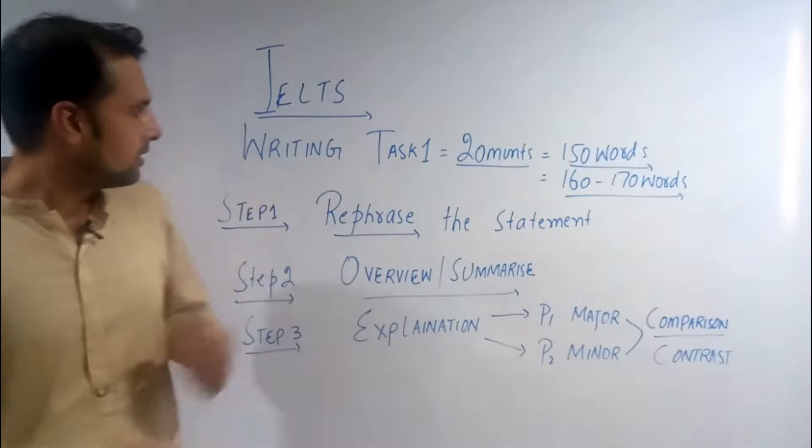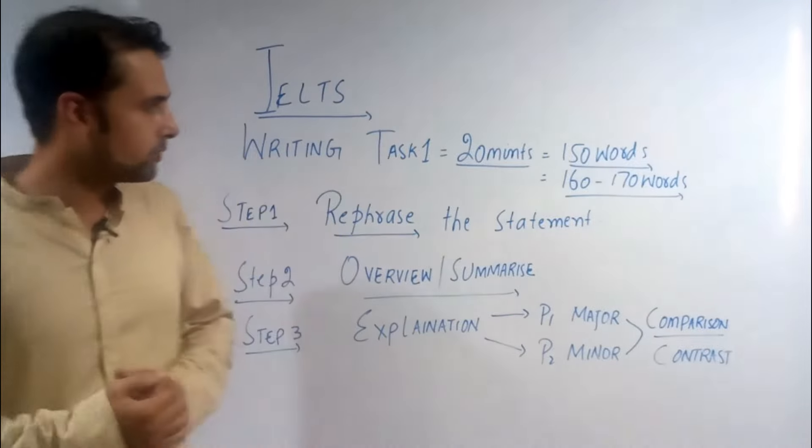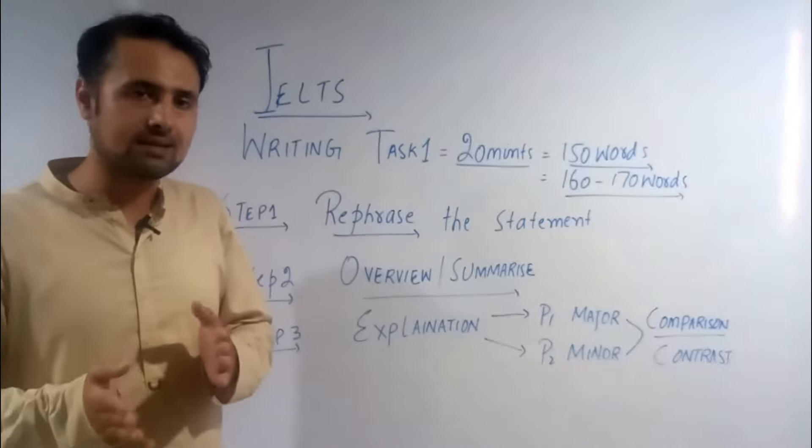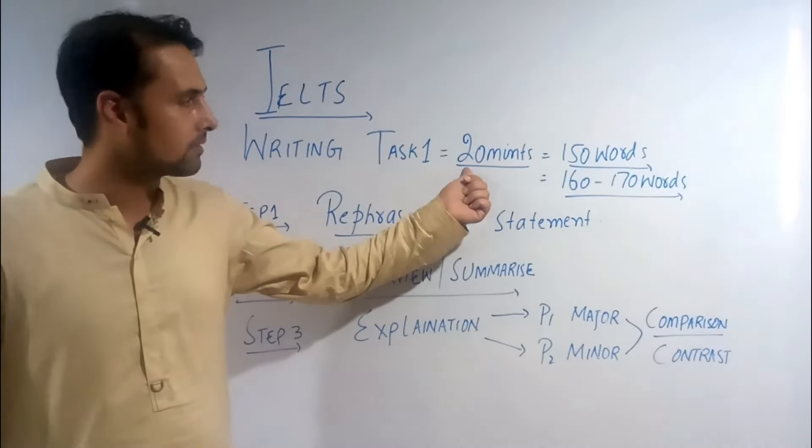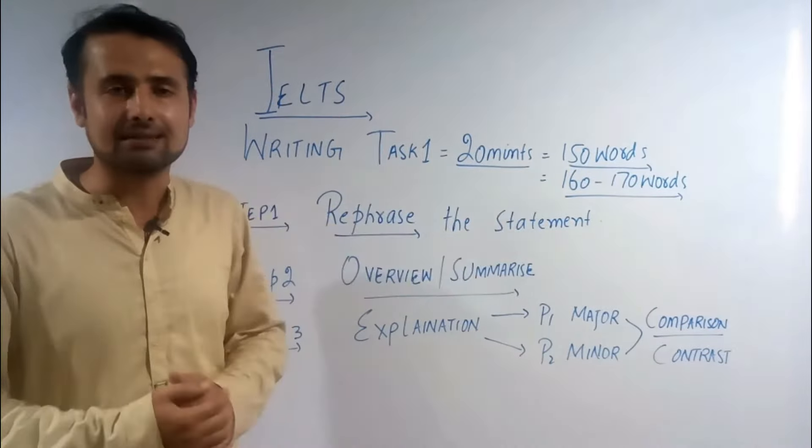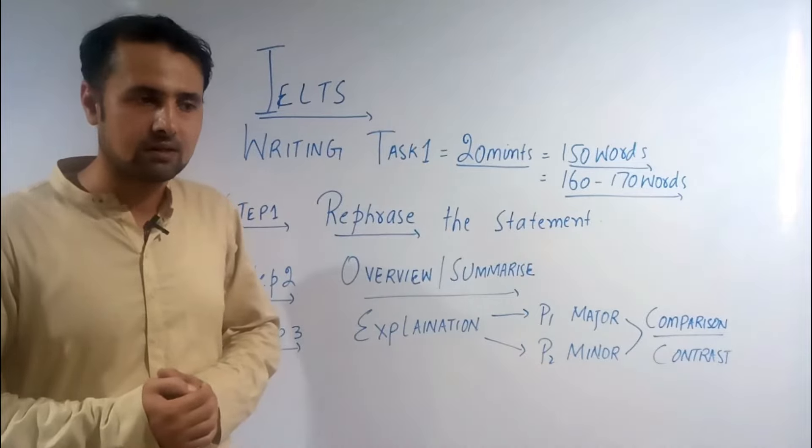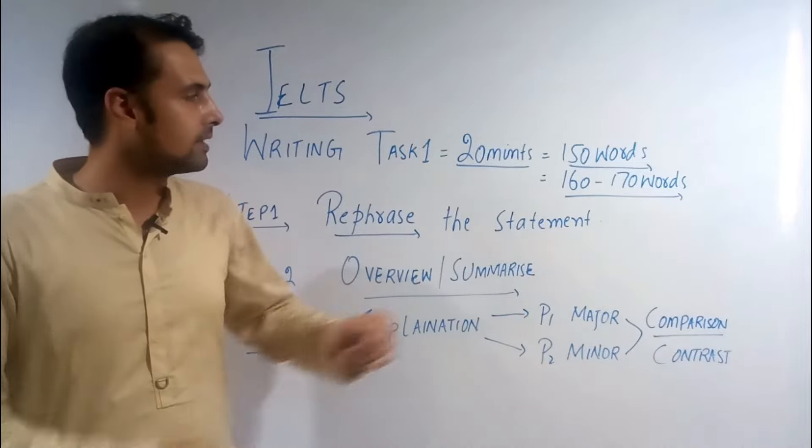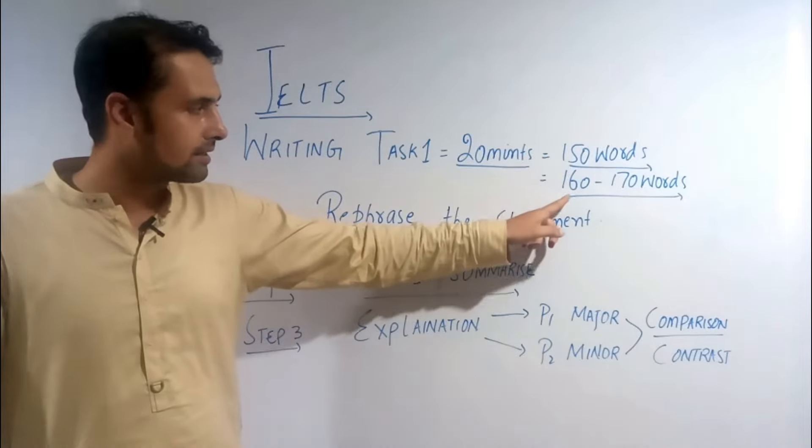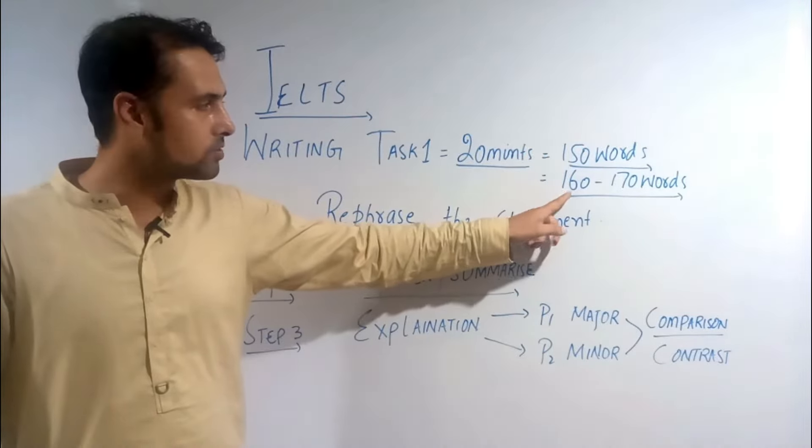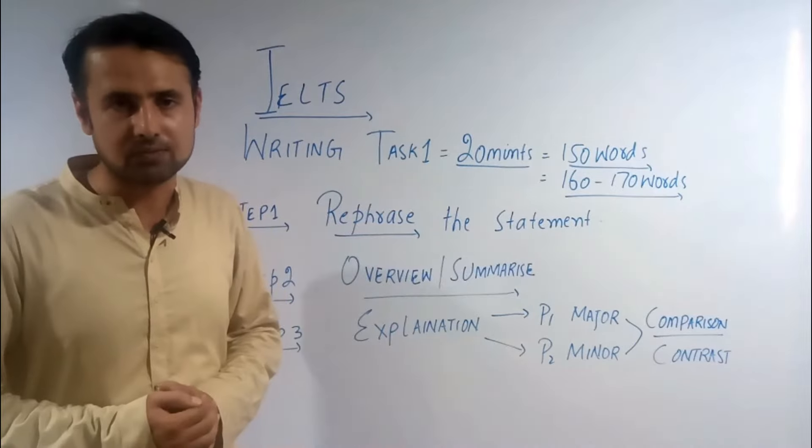First, if we talk about time duration, for Writing Task 1 students are given 20 minutes. They are supposed to write at least 150 words, so in no way should it be less than 150 words. Candidates may write 160 to 170 words.